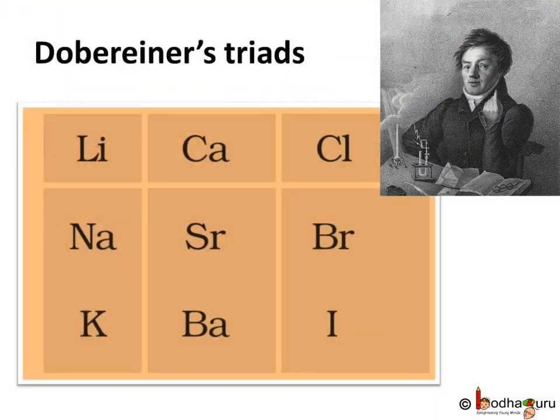In the year 1817, Johann Wolfgang Döbereiner, a German chemist, tried to arrange the elements in groups of threes and called those triads. When the elements in a triad are written in the order of atomic masses, the atomic mass of the middle element seems to be roughly the average of the other two elements' atomic masses. But he only managed to find three such triads based on similarities in properties.